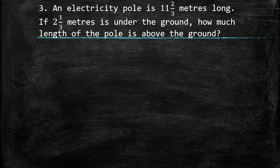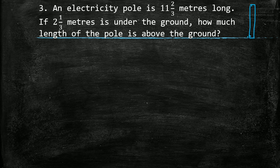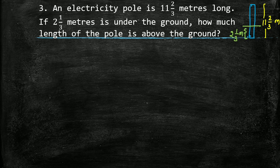Next question: an electricity pole is 11 whole 2 upon 3 meters long. If 2 whole 1 upon 3 meters is under the ground, how much length of the pole is above the ground? The total length of this pole is 11 whole 2 upon 3 meters. Out of this, 2 whole 1 upon 3 meters is under the ground. We have to find how much length is above the ground — so from the total length we will subtract the length which is under the ground.